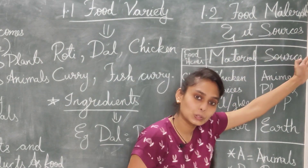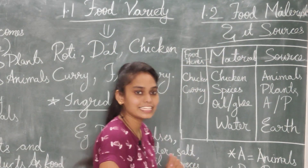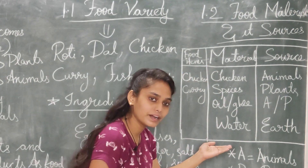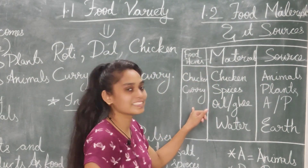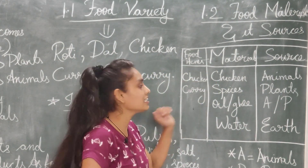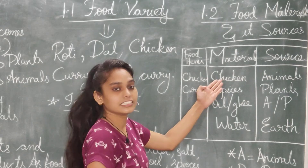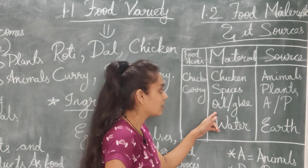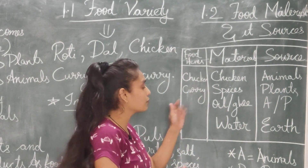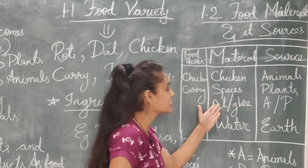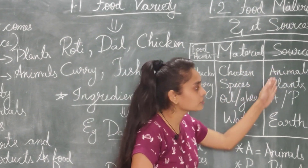Now we start with 1.2 — food material and its source। Varieties और ingredients तो हमने पढ़ लिए, अब उनके sources पढ़ेंगे — कहां से मिला। जैसे chicken curry के लिए कौन-कौन से ingredients चाहिए? That is chicken, spices, oil या घी, and water — ये सारी चीज़ें मिलाकर हम chicken curry बना सकते हैं।